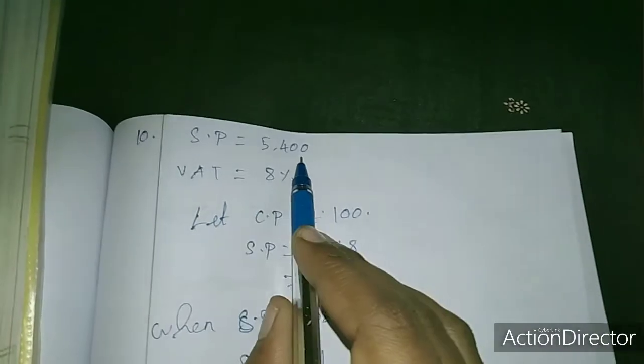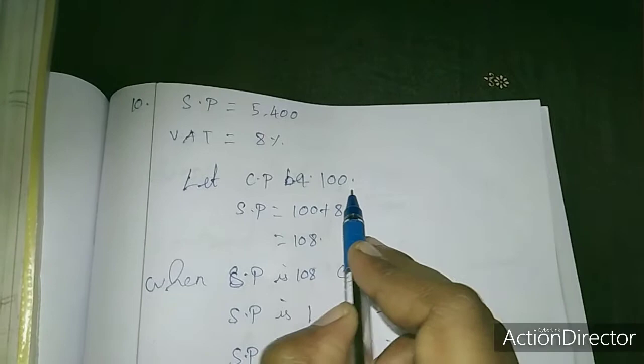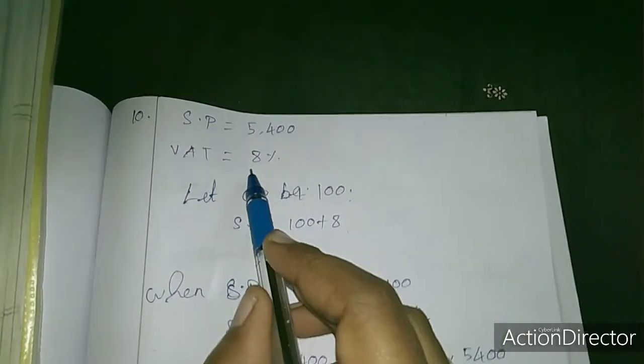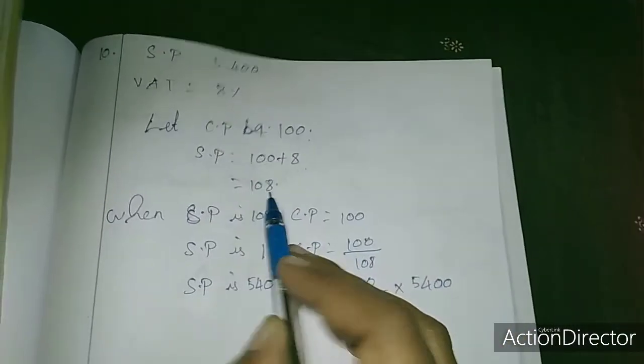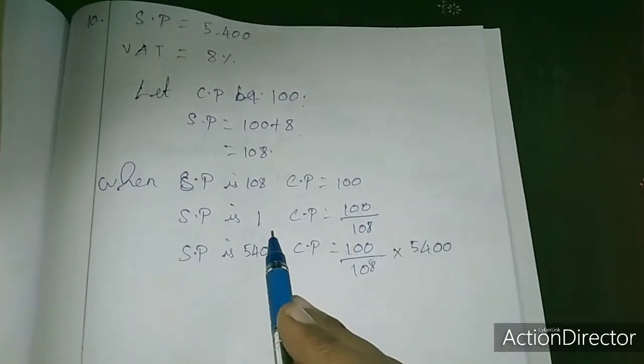See here, selling price is 5,400, VAT is 8%. So let's see, if cost price is 100, then selling price is 100 plus 8 VAT equals 108.